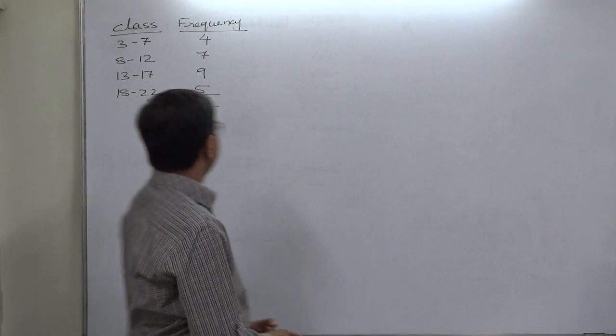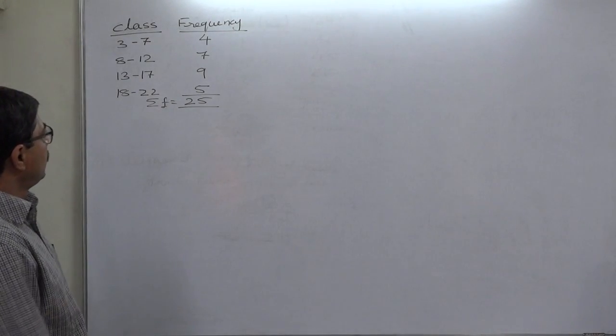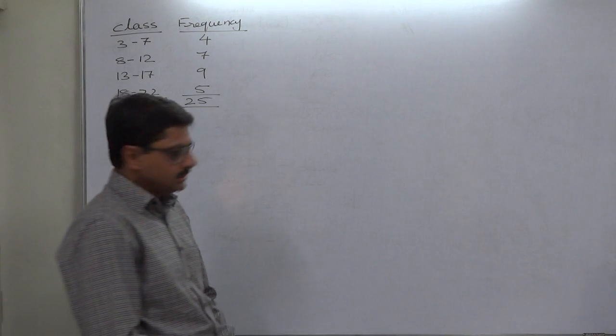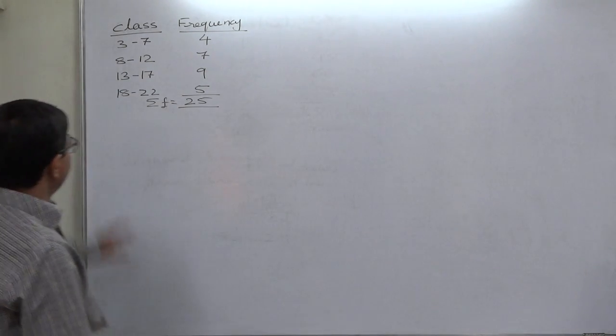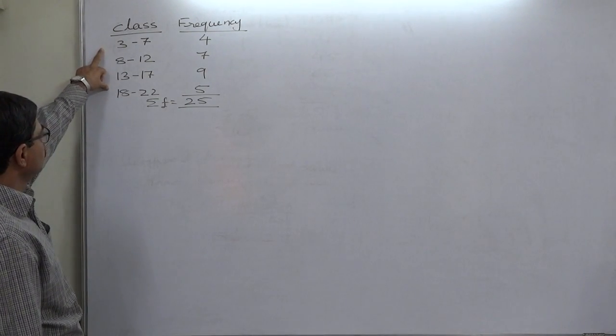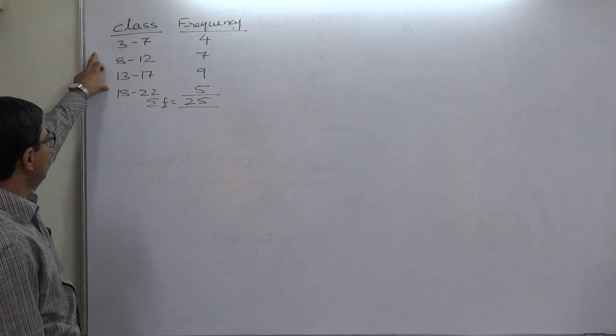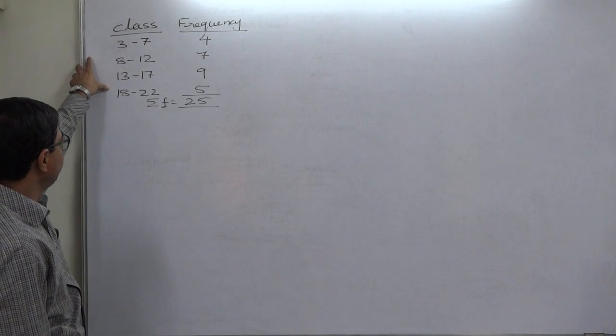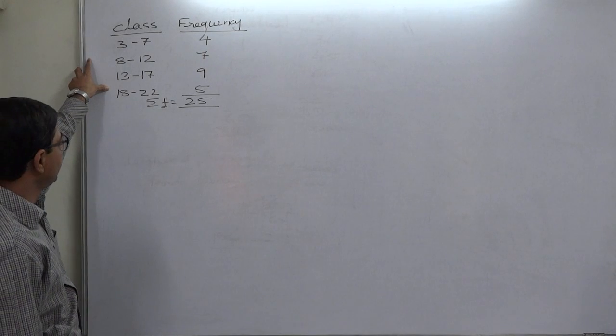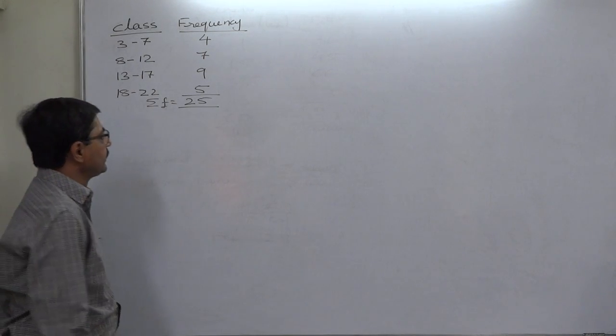Welcome friends, let us take another case of group data for continuous frequency distribution. In this case we have 4 class intervals: 3 to 7 with frequency 4, 8 to 12 with frequency 7, 13 to 17 with frequency 9, and 18 to 22 with frequency 5.